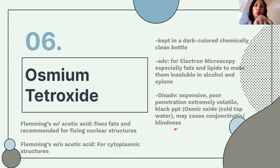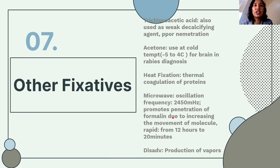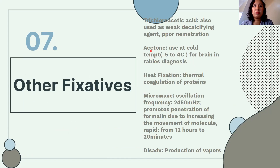Other fixatives: TCA (trichloroacetic acid) is also used as a weak decalcifying agent but has poor penetration. Acetone is also highly volatile and is used at cold temperature. It is also used for brain in rabies diagnosis, similar to Carnoy's fixative.